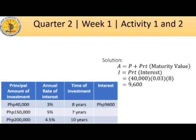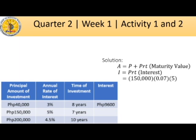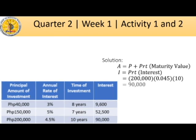For the second problem, we write the formula, substitute the given, and calculate — the answer is 52,500 pesos. For the third problem, we repeat the process: substituting 200,000 times 0.045 times 10 gives us 90,000 pesos.